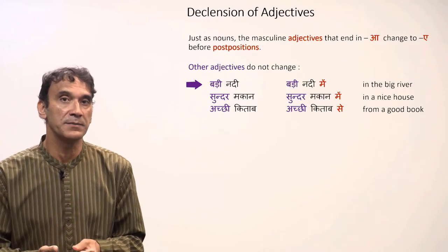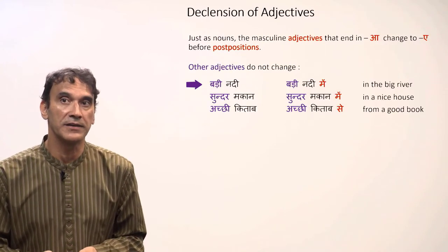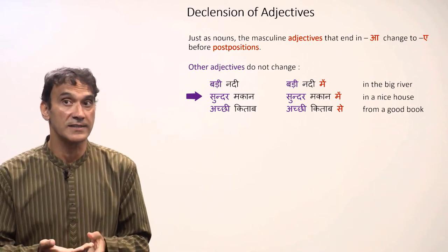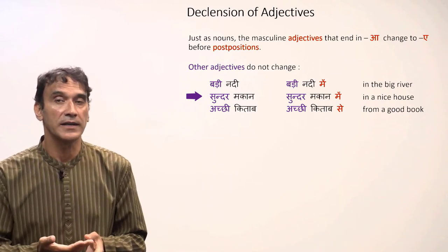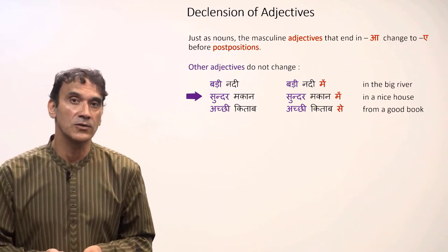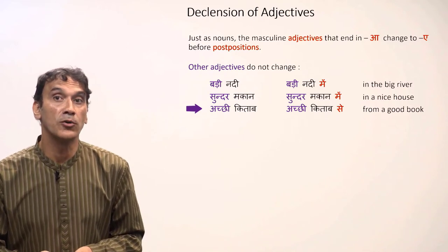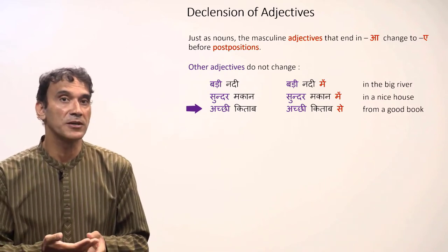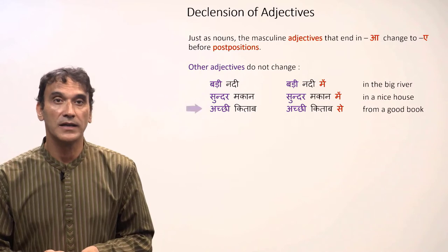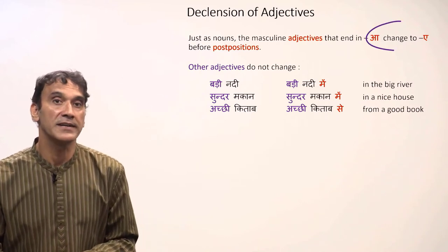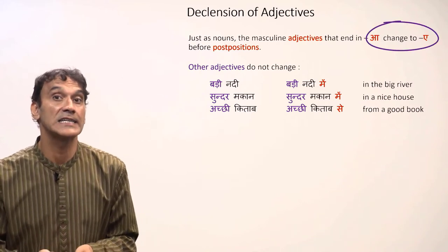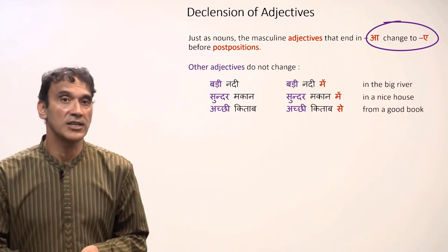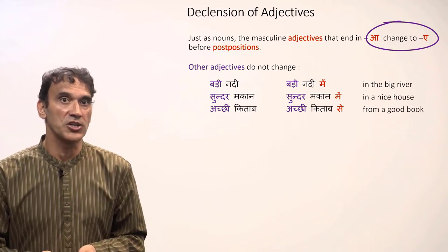'Badi nadi' (a big river) stays the same: 'badi nadi mein' (in the big river). 'Sundar makaan' (beautiful house) stays the same: 'sundar makaan mein' (in a nice house). 'Achhi kitab' (a good book) also stays the same: 'achhi kitab se' (from a good book). The only rule to remember is that adjectives ending in 'ā' change to 'e' with a postposition; all other adjectives do not change.